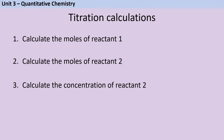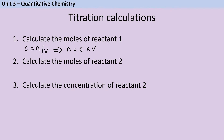In this instance we have two solutions and so the formula we're going to need is the concentration formula. Concentration is found by dividing the number of moles by the volume, and we can rearrange that so that moles equals concentration times volume. Since we already know the concentration and the volume of one of the reacting solutions, we will be able to work out the number of moles.